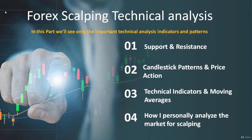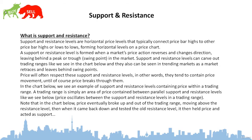In the first chapter we are going to see support and resistance. The second chapter we are going to see candlestick patterns and price action. The third chapter we are going to see technical indicators and moving averages. And the last part we are going to see how I personally analyze the market for scalping. So let's start — support and resistance. What is support and resistance?